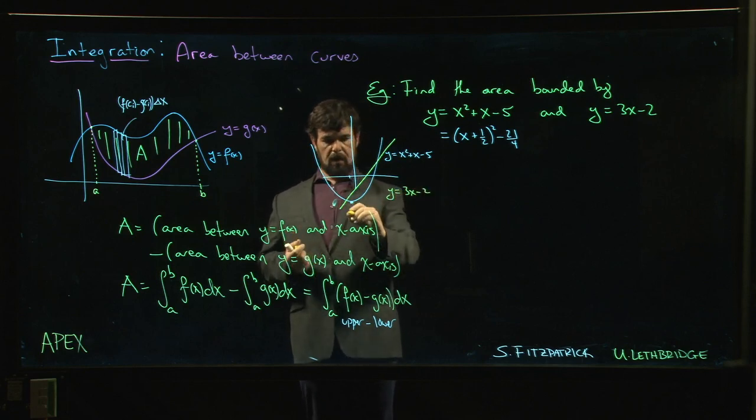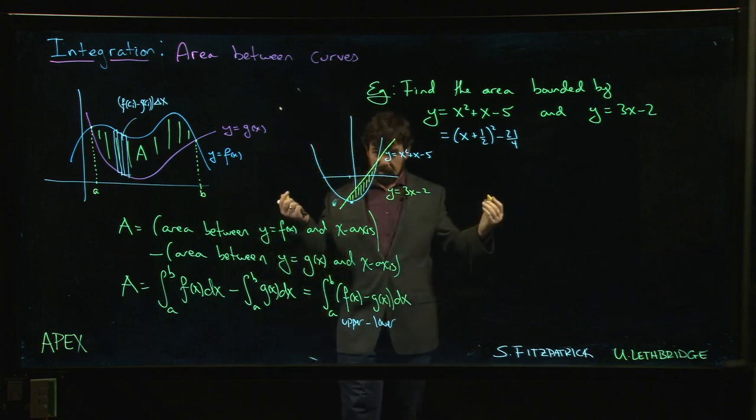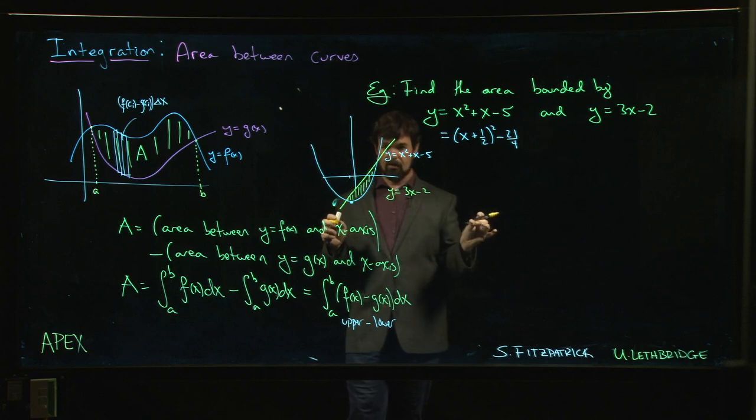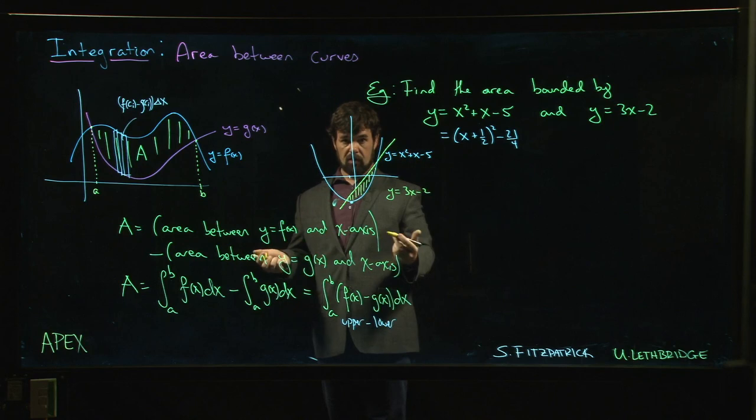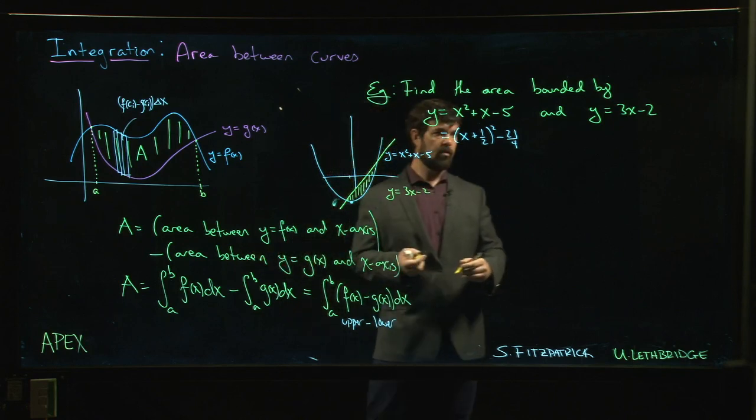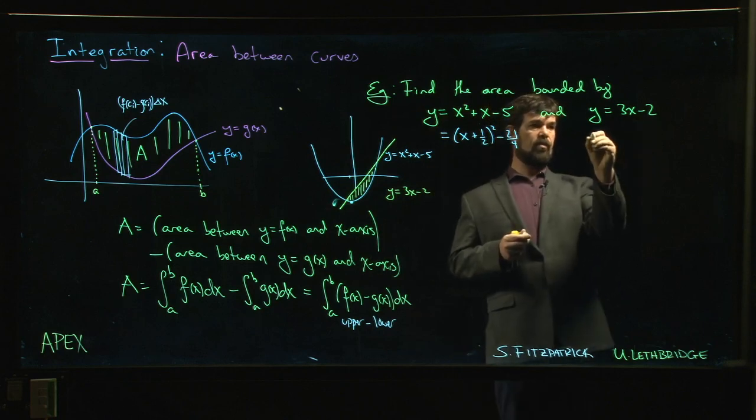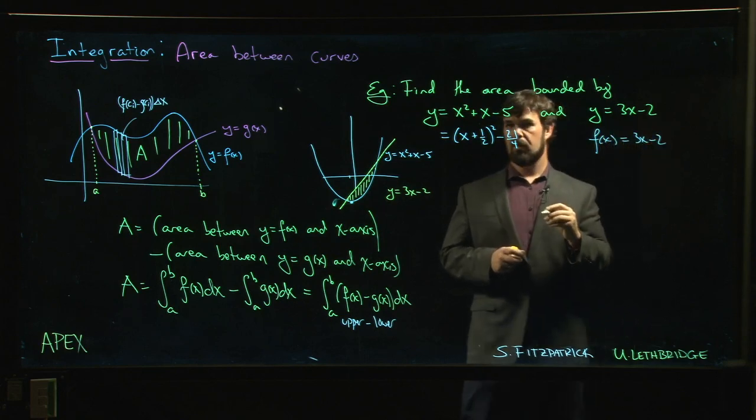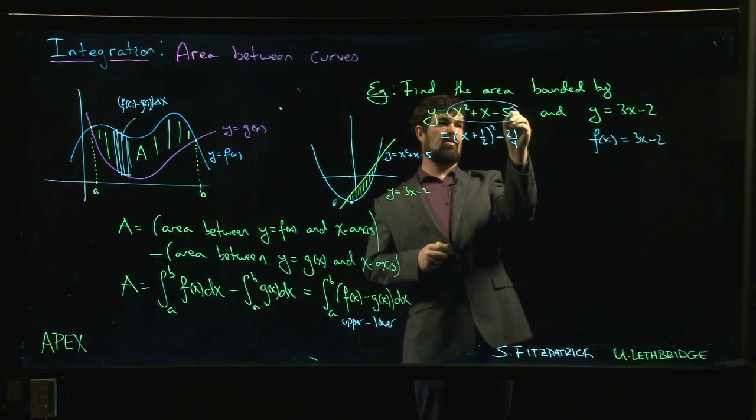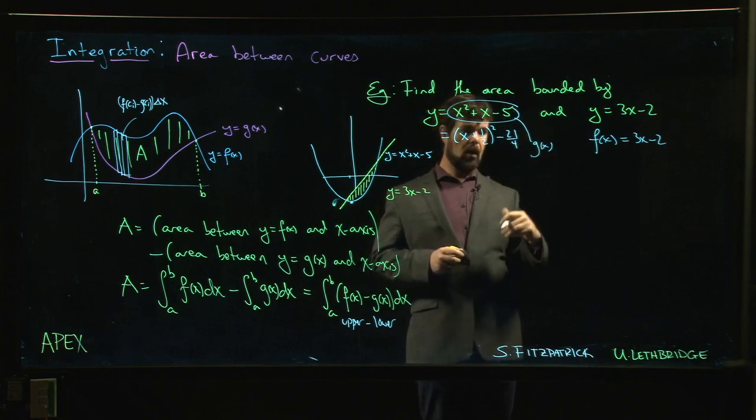Now you can see the region that's enclosed. One of the reasons you want to draw things is you have to be able to do upper minus lower. Until you draw the curves, you don't necessarily know which one is the upper curve, which one's the lower curve. Now we realize that this should be my upper curve, so this is my f(x). f(x) is 3x - 2. This must be my g(x).